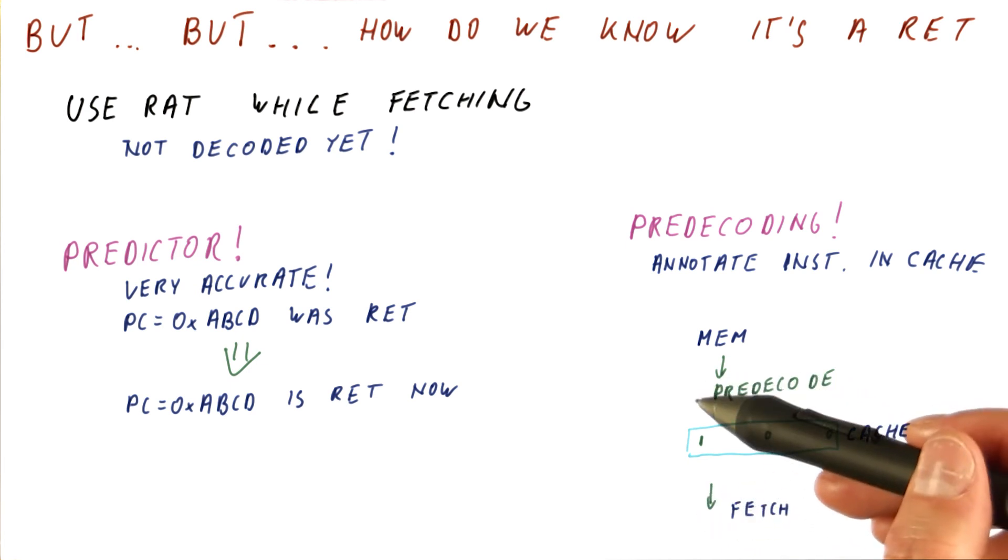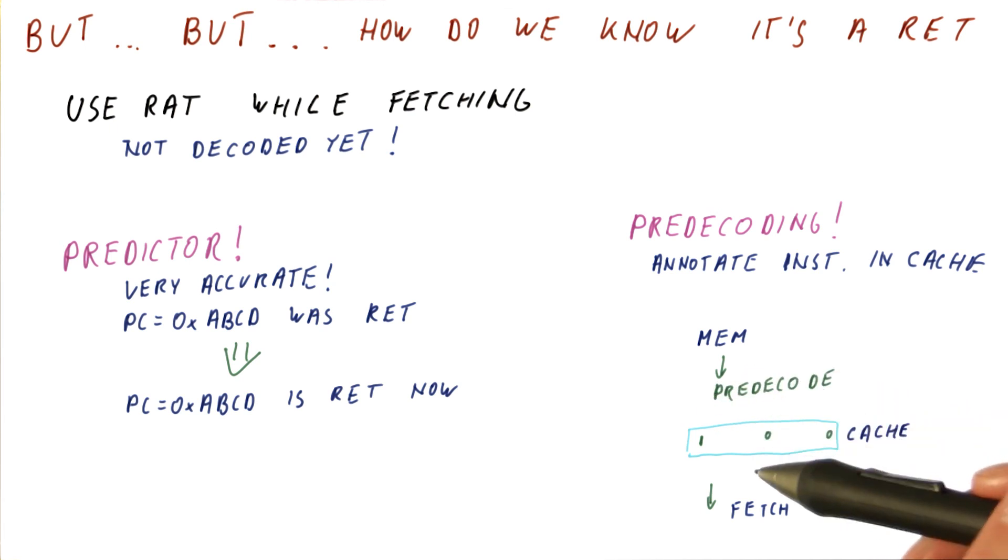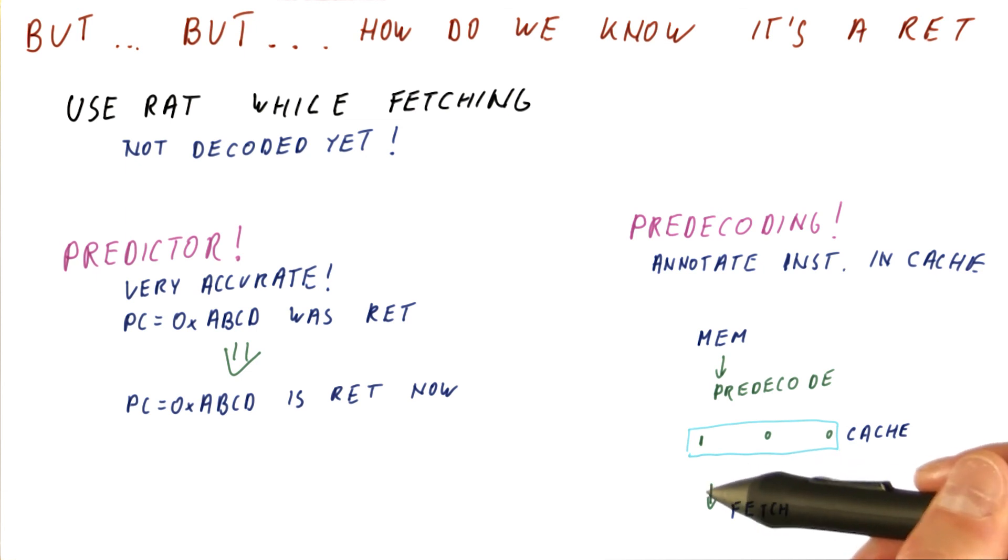So there are a lot of things that modern processors do in this pre-decoding phase, in order to avoid doing it when we are on the clock after we have fetched the instruction.